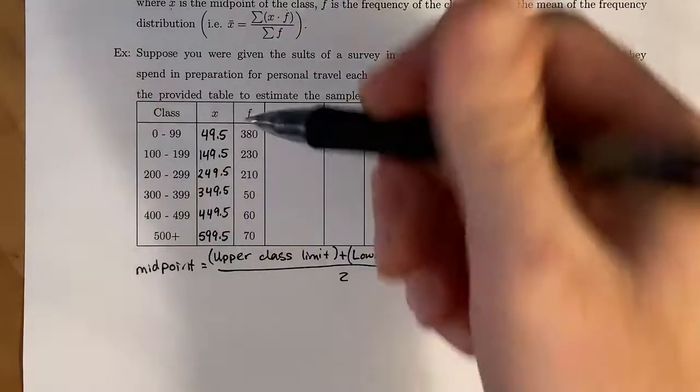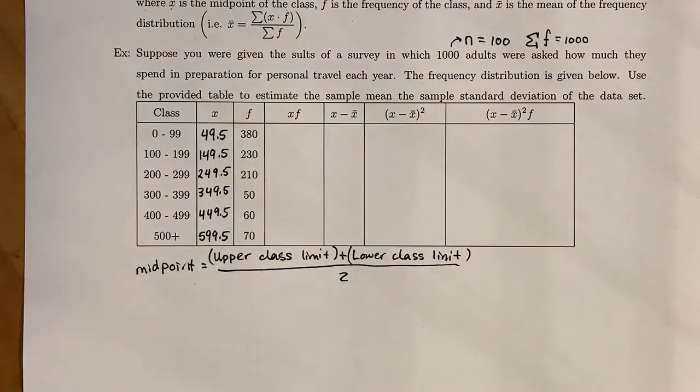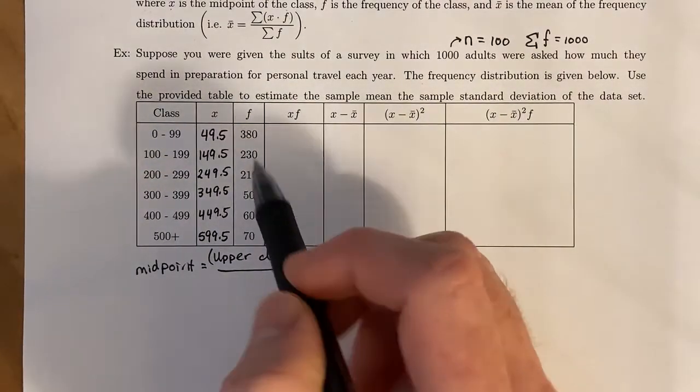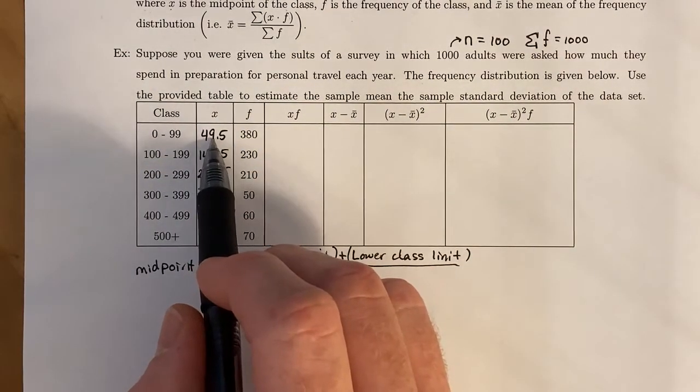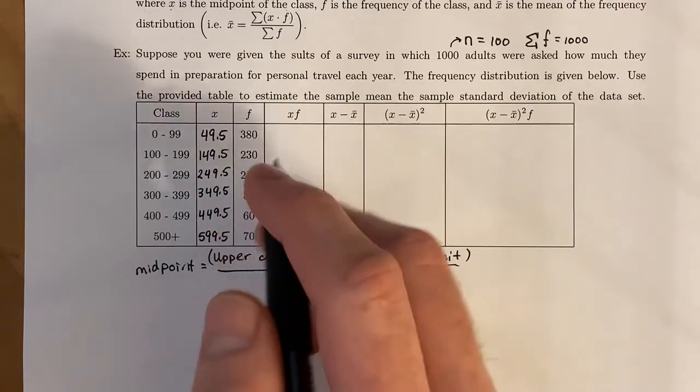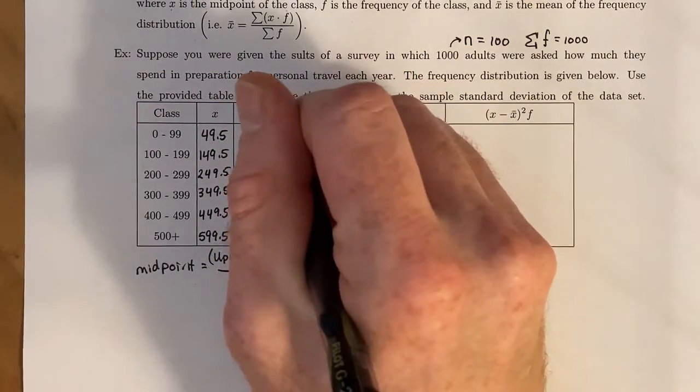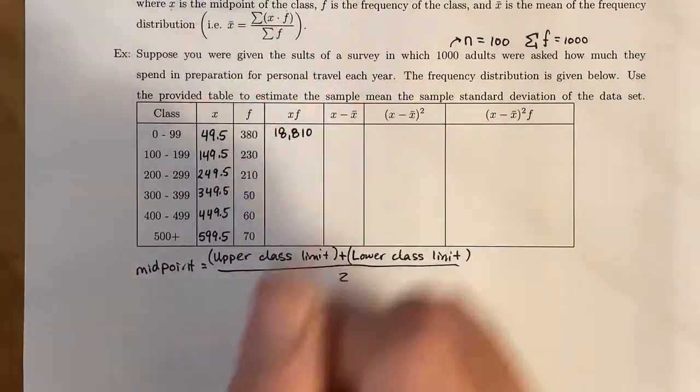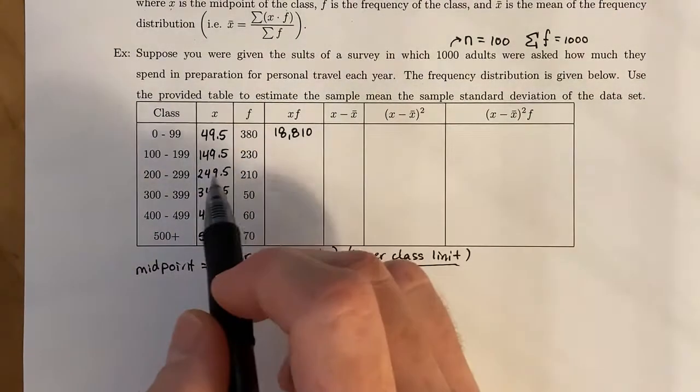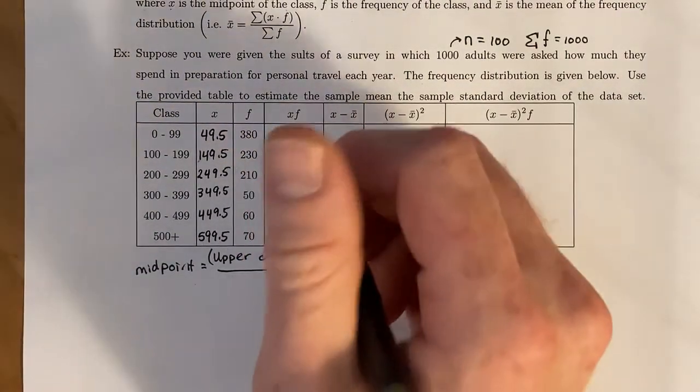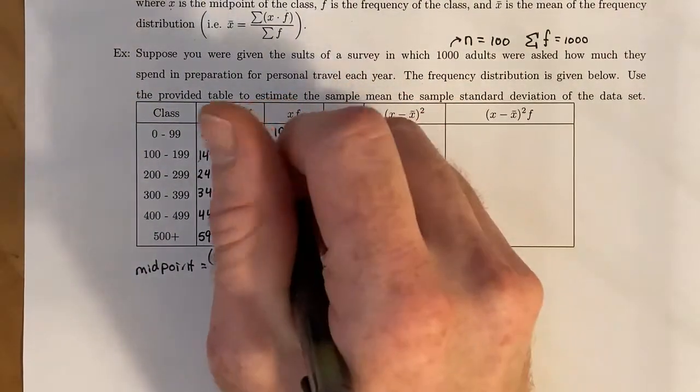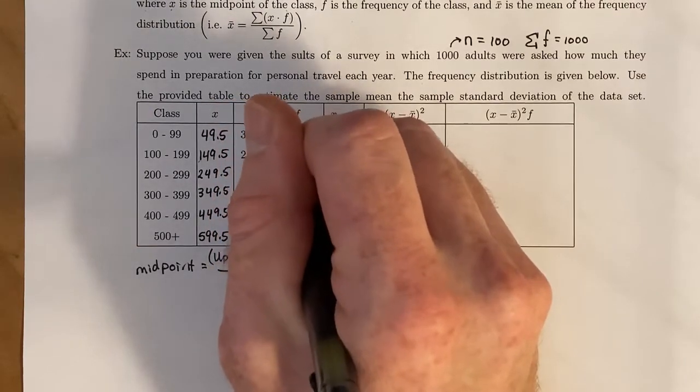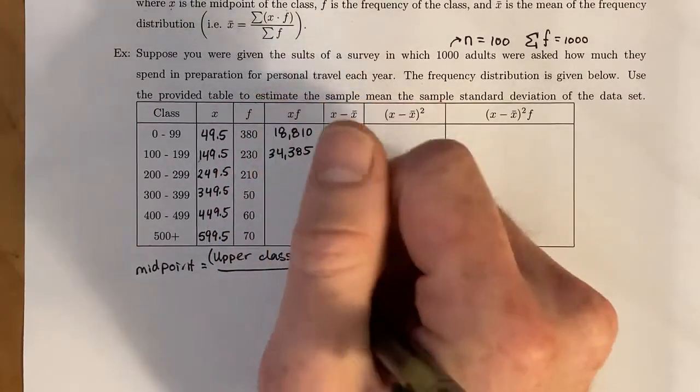Then we're told the frequencies. To get this column, we take 49.5 times 380, which gives us 18,810. Then we take 149.5 times 230, which gives us 34,385. We just keep doing that.